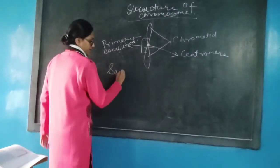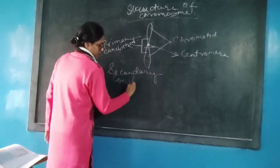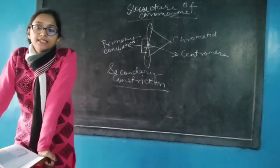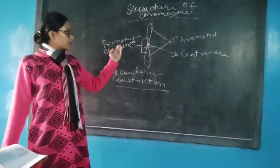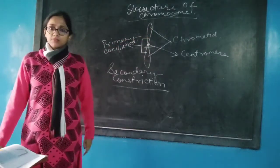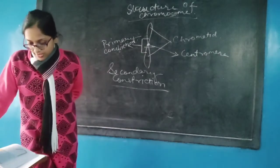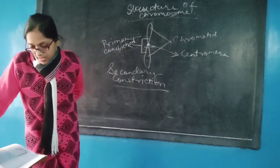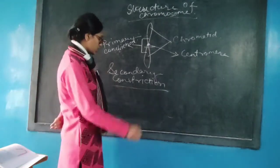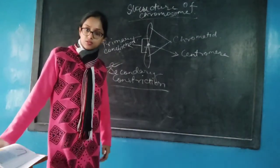Next, we will move on to the secondary constriction. Secondary constriction is another constriction apart from the primary constriction. It can be present in one arm or in both the arms. It is the site where the nucleolus actually originates — the site where the nucleolus lies. The nucleolus, along with the secondary constriction region, forms the nucleolus organiser region.